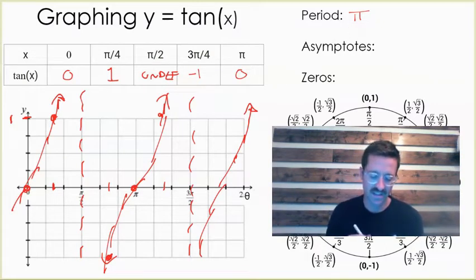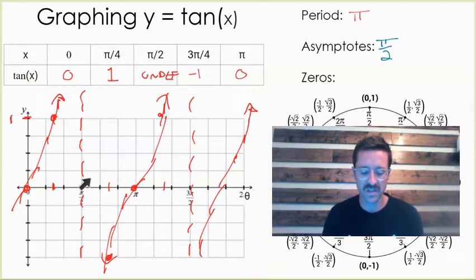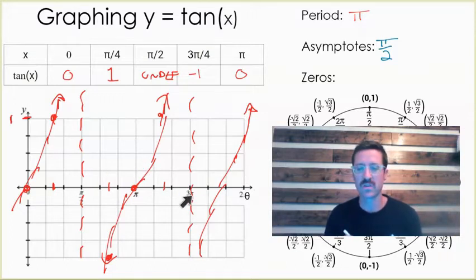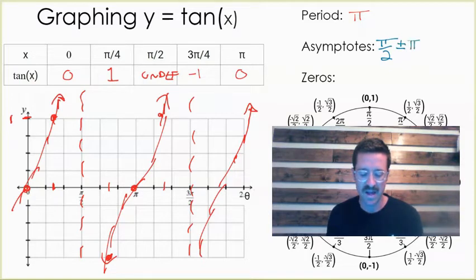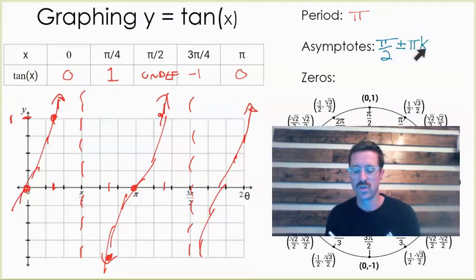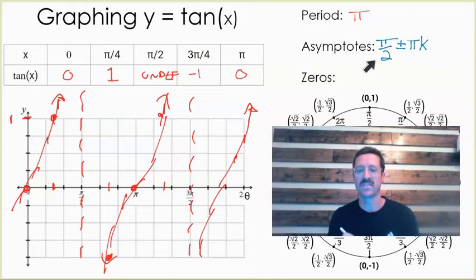Now let's notice our asymptotes. Our first asymptote takes place at π over 2 units, but then it repeats every π units. If I go π units to the right, another asymptote. Two π units to the right, another asymptote. So we show that as π over 2 plus or minus π times some number k, because that could be plus 2π or minus 4π. If you follow this template, you'll find an asymptote.